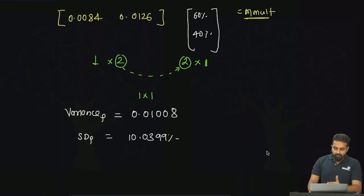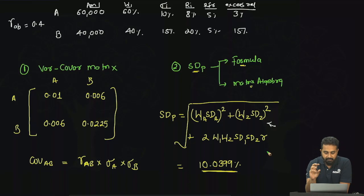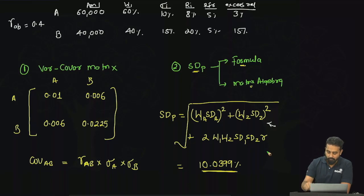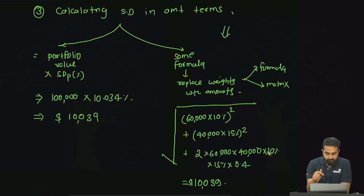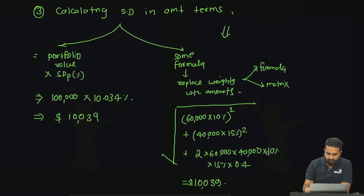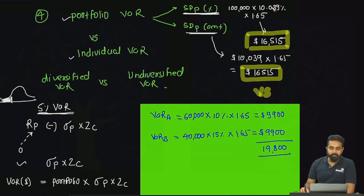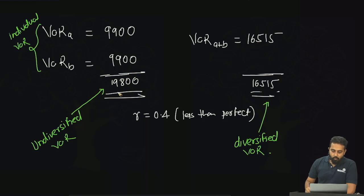Quick recap: we built the variance-covariance matrix, calculated portfolio standard deviation via formula and matrix algebra, converted to dollar standard deviation, calculated portfolio VAR, calculated individual VARs, and confirmed the portfolio VAR is lower than the sum of individual VARs due to diversification.